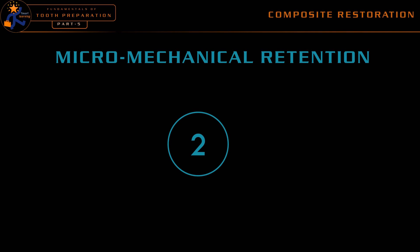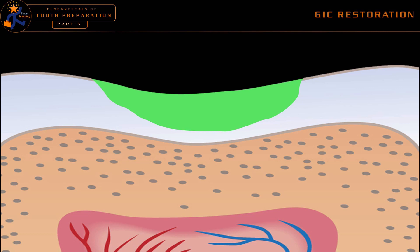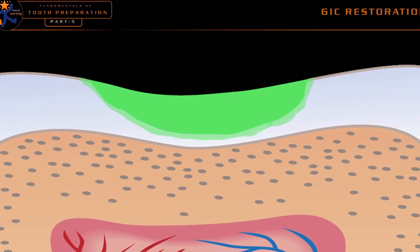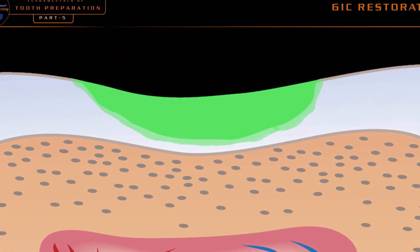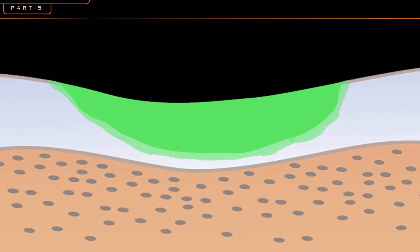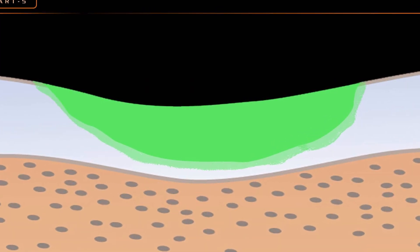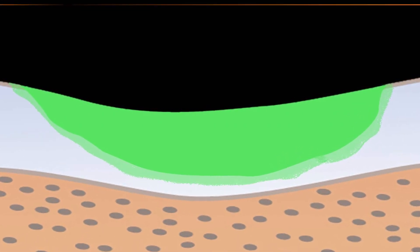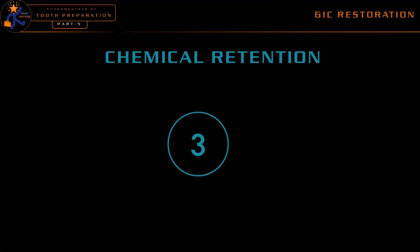This is the second form of primary retention. Now let's move on to the third type. Here, the restorative material is mixed and placed in the prepared tooth — no specialized cavity design is given, and no bonding procedure is done. The restorative material chemically bonds to the tooth structure. GIC restoration is retained to the tooth by chemical adhesion. The bond strength is lower than micro-mechanical retention as in composite, but in most circumstances it is adequate to retain the restoration inside the prepared cavity. Thus, chemical adhesion is the third form of primary retention of restorative material.